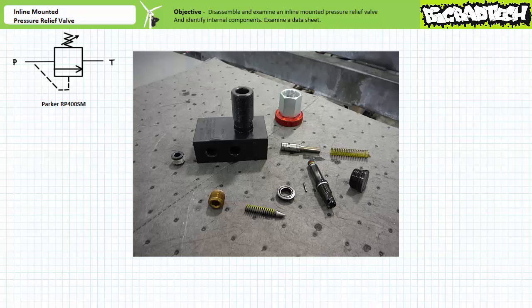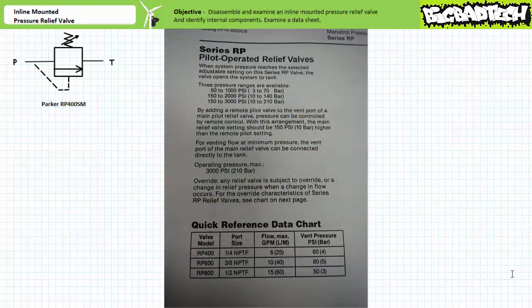That's it. We have disassembled this pilot operated pressure relief valve. Reassembly is pretty much the reverse of disassembly. Let's take a quick look at some of the pertinent entries in the datasheet for this particular valve before we bring this lecture to a close.